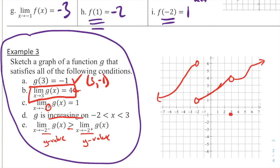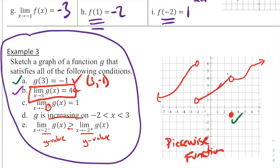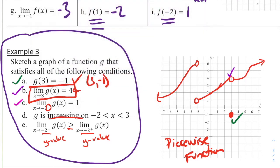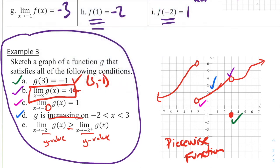Let me fill in that particular point at negative 1. We can double-check: g of 3 equals negative 1 — that's right there. The limit as x approaches 3 of g of x is 4 — true. The limit as x approaches negative 2 from the right is 1 — we can see that. Is g increasing from negative 2 to 3? Yes, that function is going upward the whole time. And is the limit from the left greater than the limit from the right at negative 2? Yes. Great — we are done.